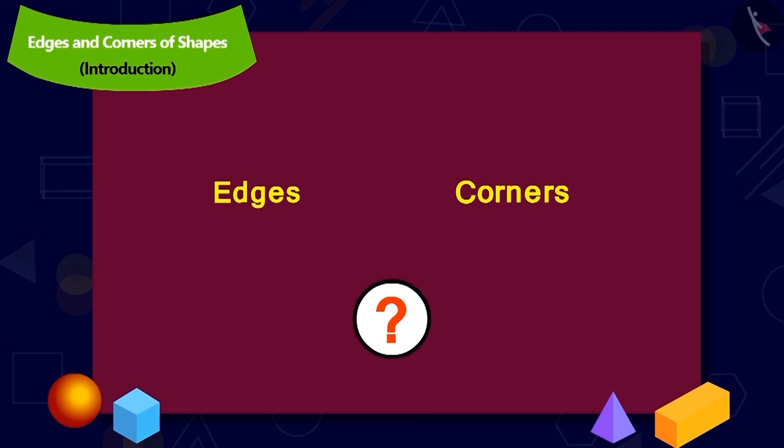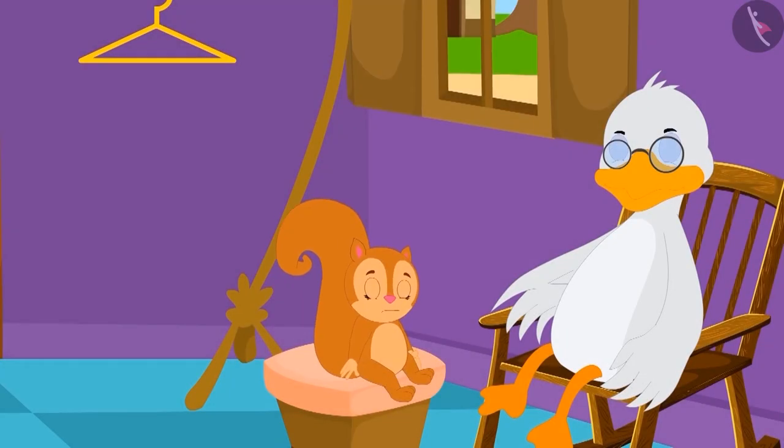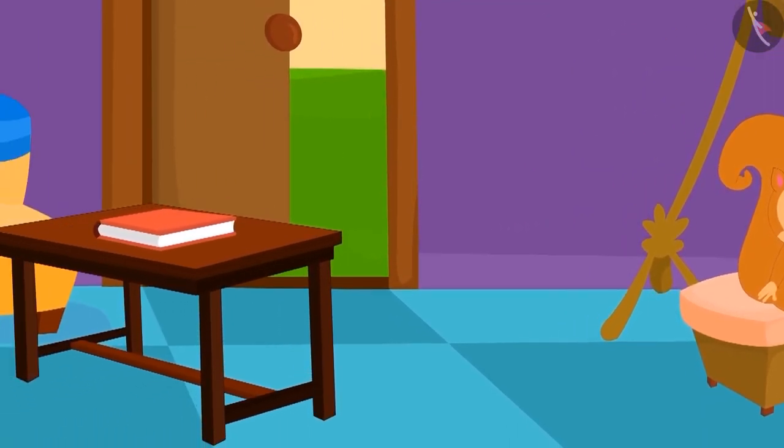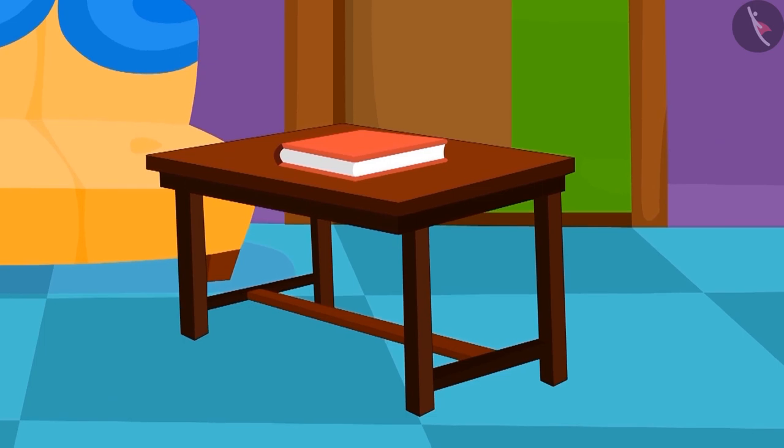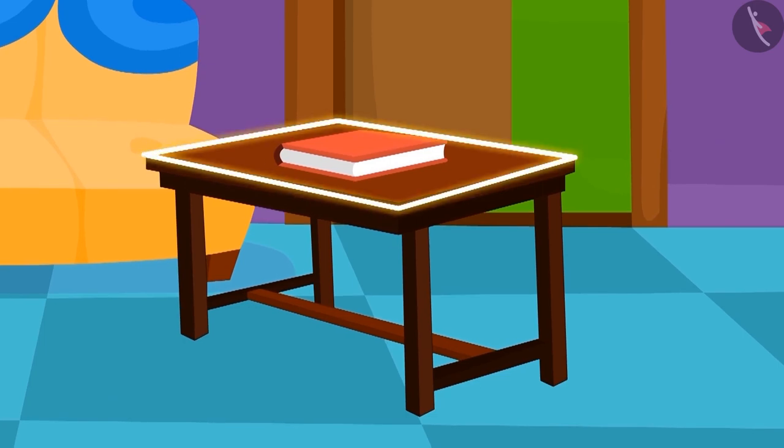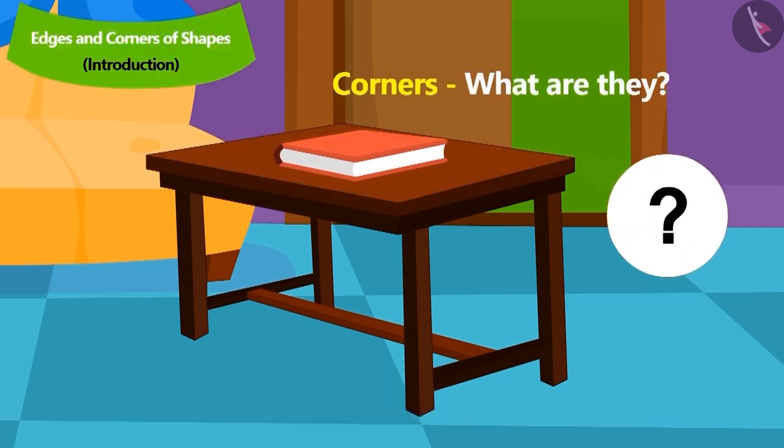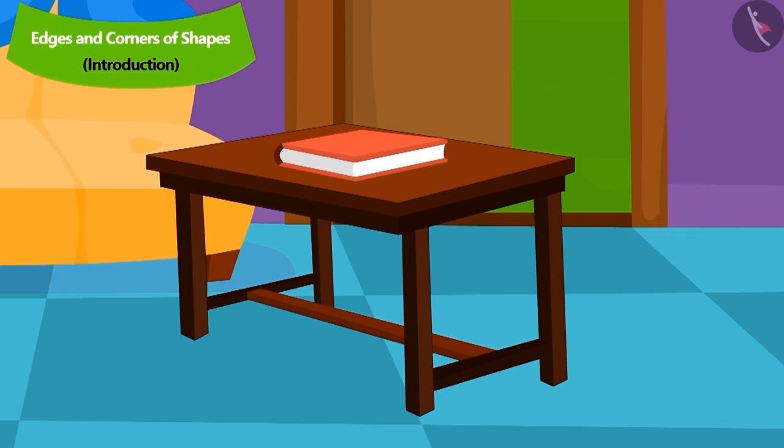Let us also learn the concepts of edges and corners from Uncle. Uncle showed the table at his place. See that outside the surface of this table, four lines are forming the boundary of the table. We call them edges. And do you know what is meant by corners? Where two edges meet, we call that point as a corner.